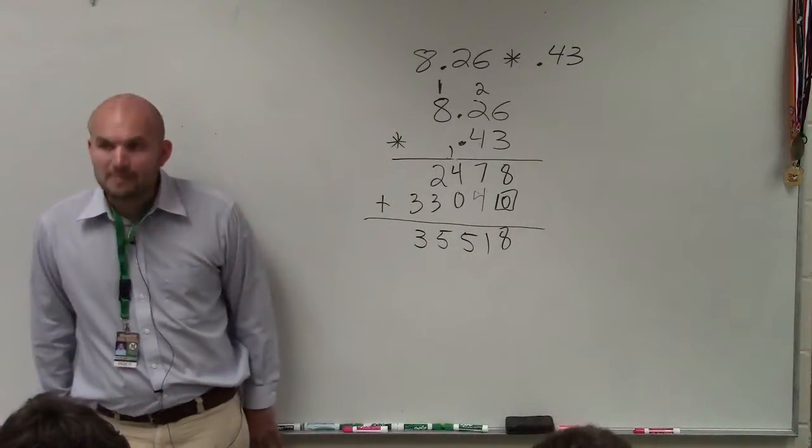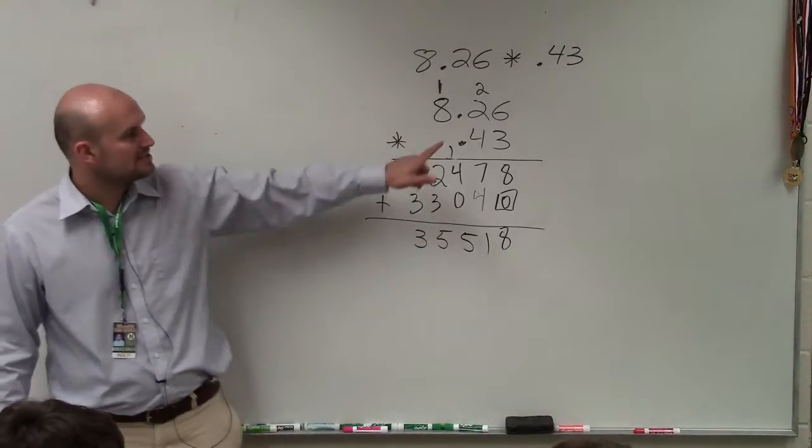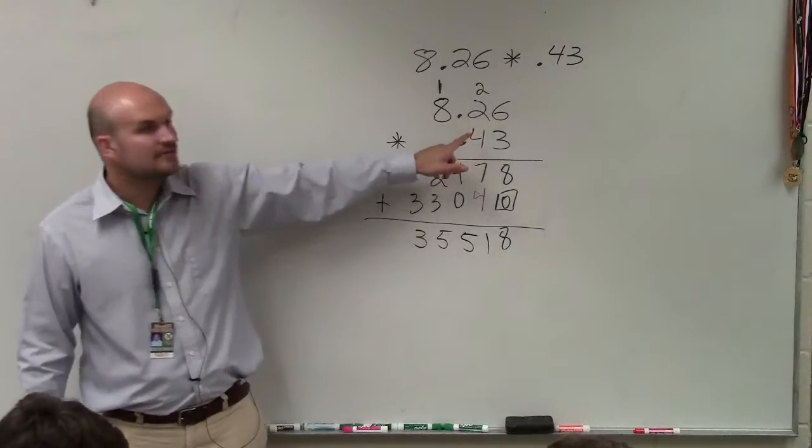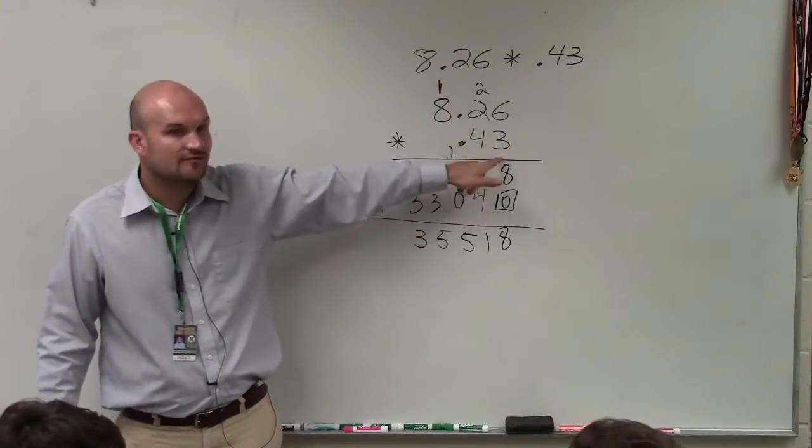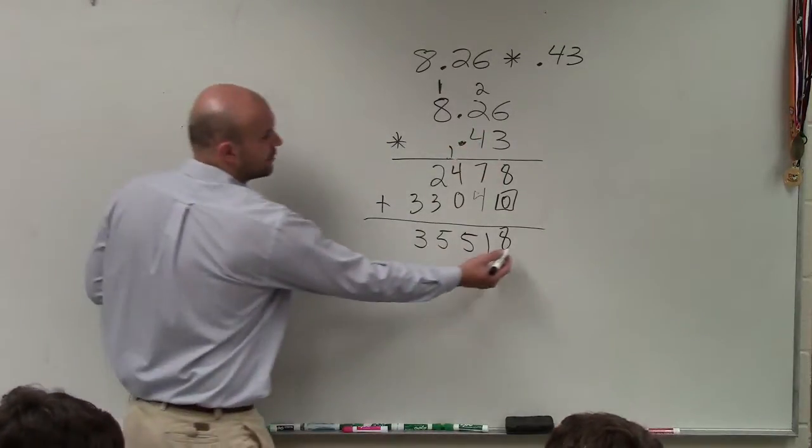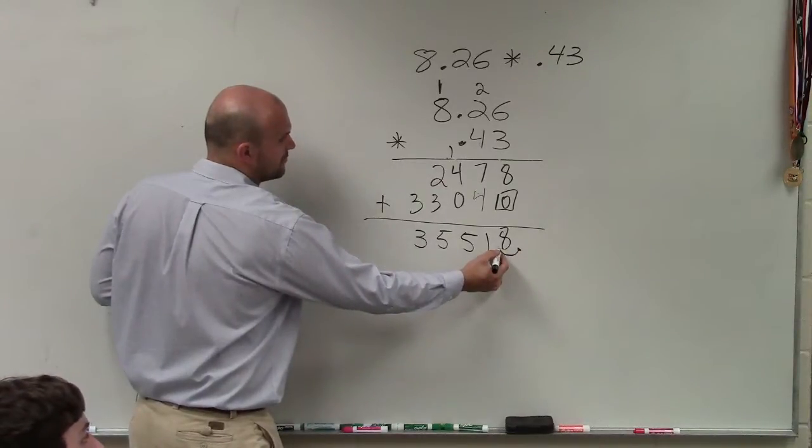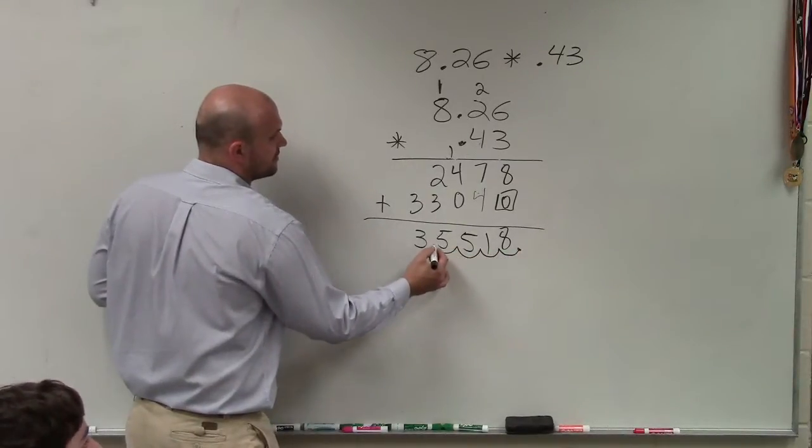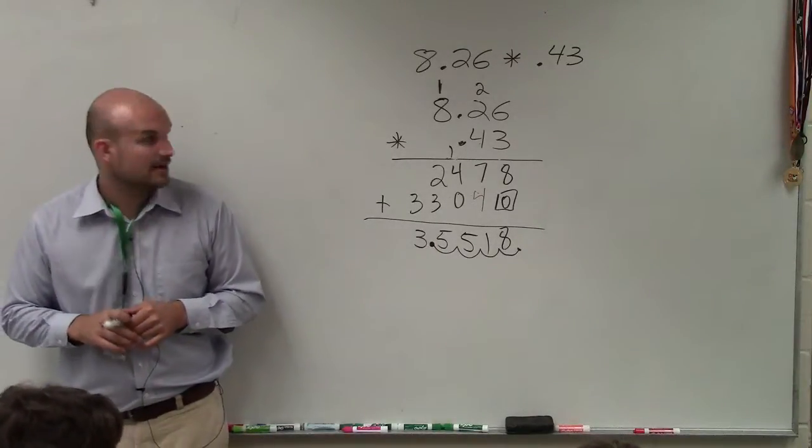Now, to determine where to put the decimal point, what you simply do is count the number of places to the right of the decimal. So I have 1, 2, 3, 4. So therefore, you start all the way to the right and go over four place values: 1, 2, 3, 4. And that is your final answer.